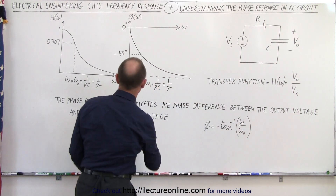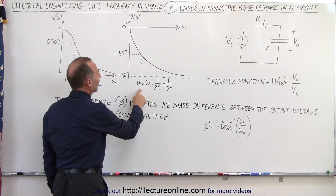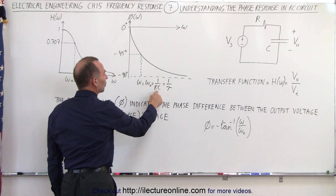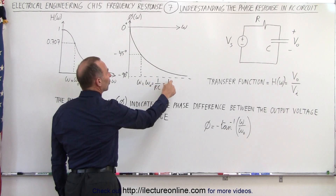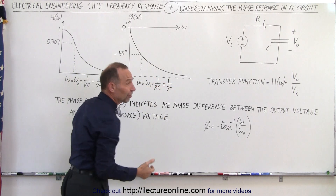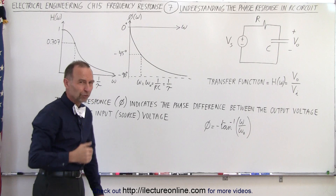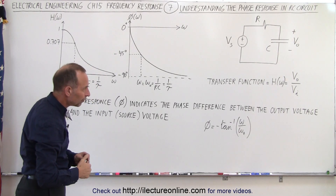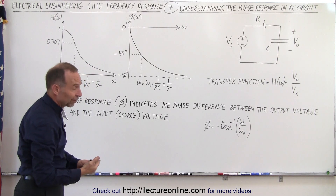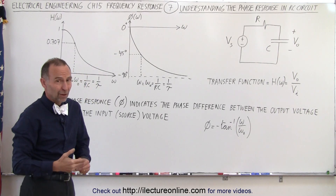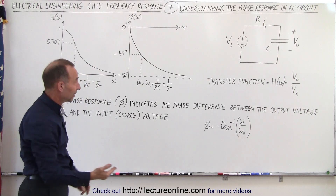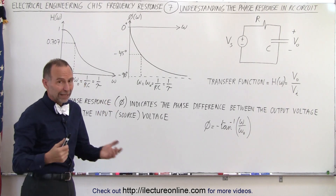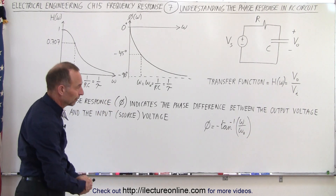Omega sub-naught is defined as 1 over RC, which is equal to 1 over the time constant — it's the inverse of the time constant. For example, if the time constant is one-tenth of a second, then omega will be 10 radians per second.